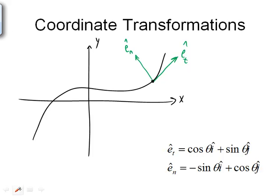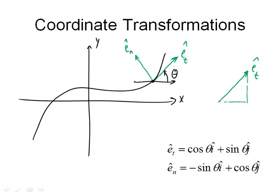The X axis in this scenario might be parallel to this point, which means the tangential unit vector makes some angle theta with respect to a line parallel to the positive X axis. E_tangential can be broken down into a portion parallel to the X axis: cosine of theta times the magnitude of E_tangential (which is one) in the I direction, and sine of theta times the magnitude of E_tangential (also one) in the J direction.